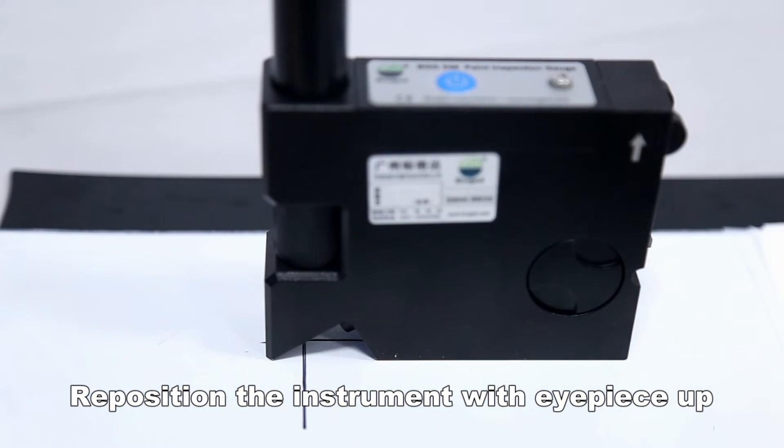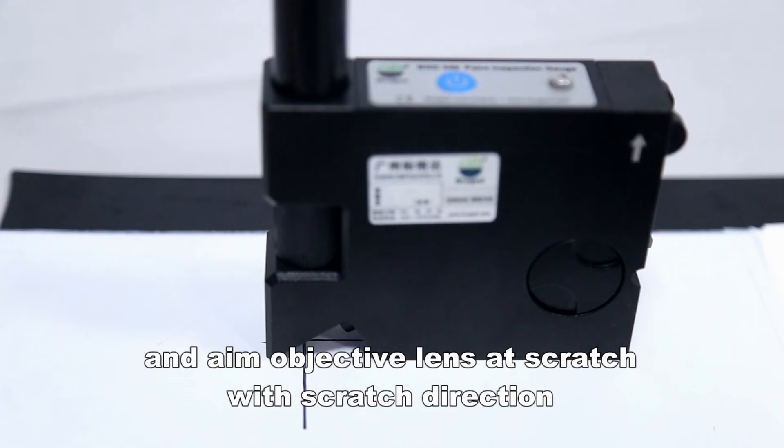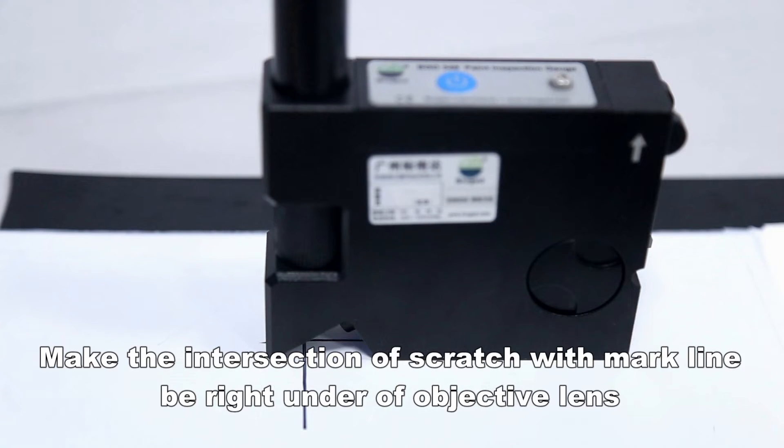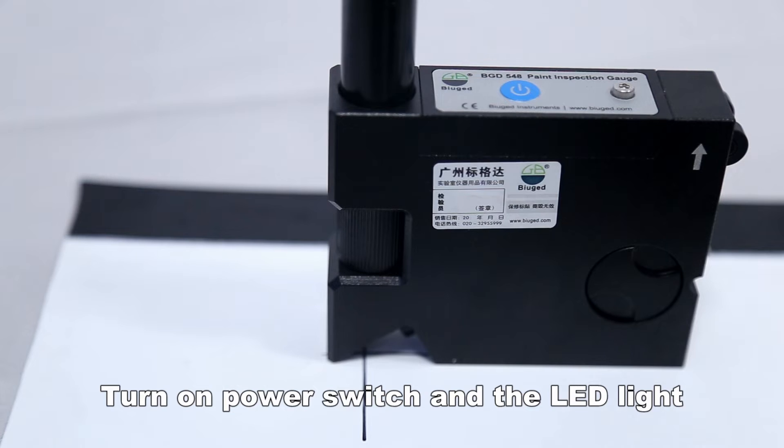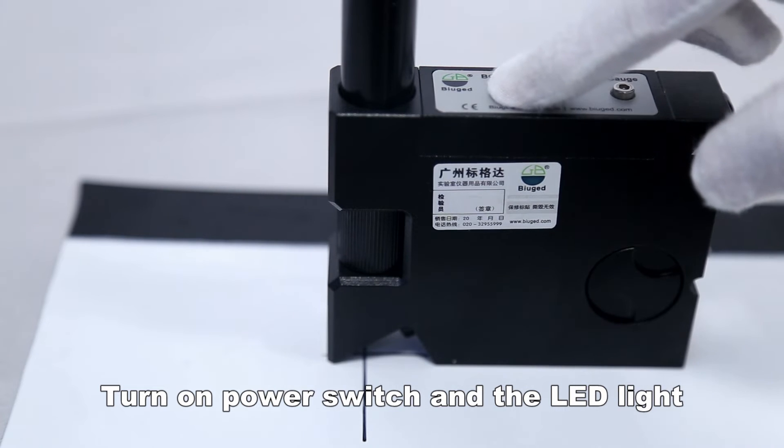Reposition the instrument with the eyepiece up and aim the objective lens at the scratch. Make the intersection of the scratch with the marked line be right under the objective lens. Turn on the LED light power switch.